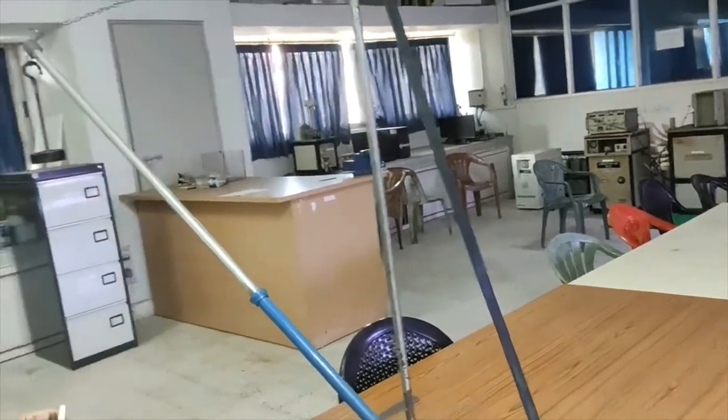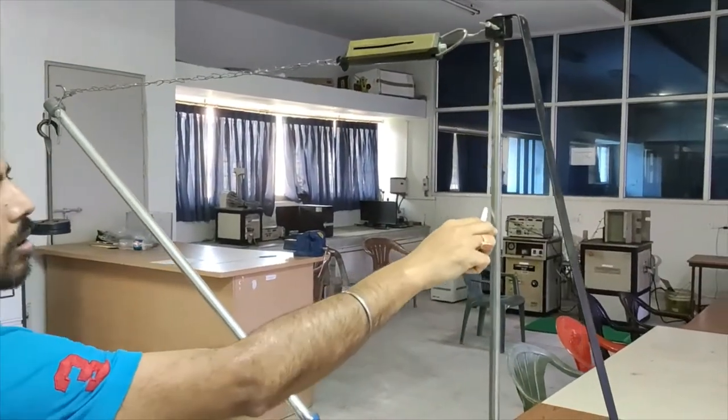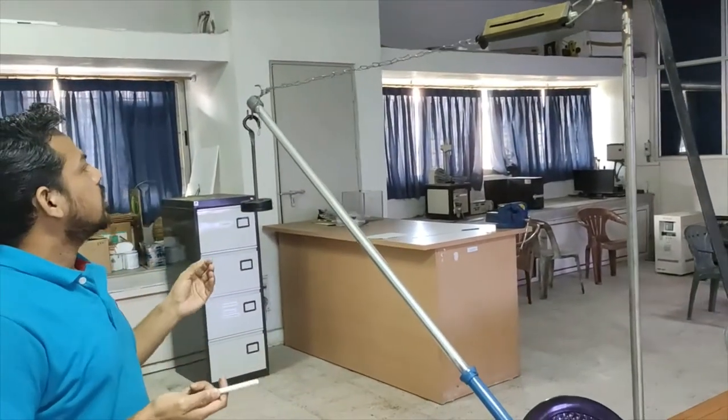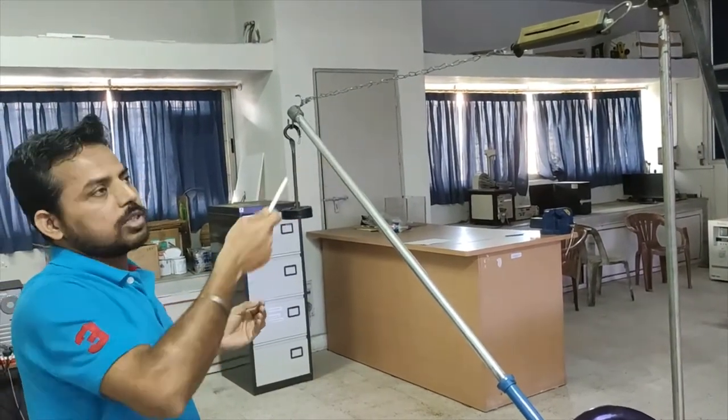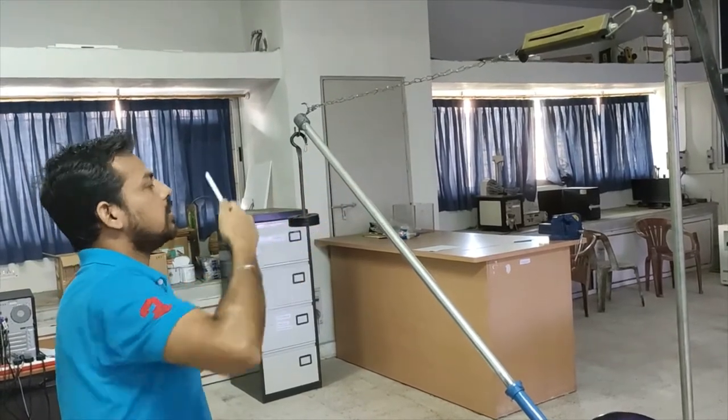One question arises: what happens if this post is not vertical? The answer is simple, there would be error in the three member forces, that means S1, S2 and W also.